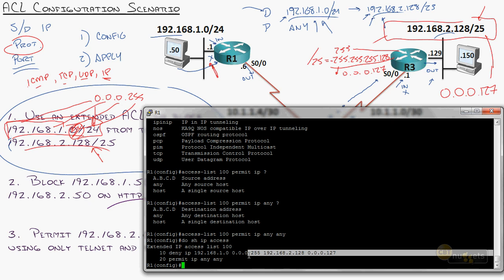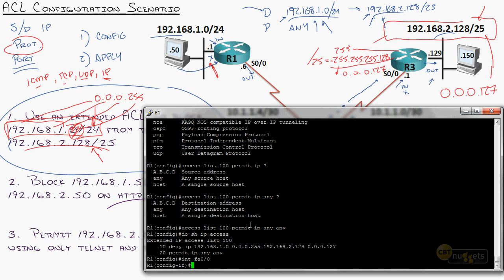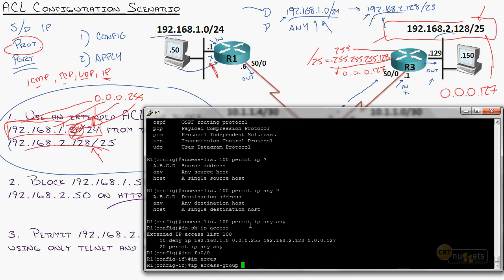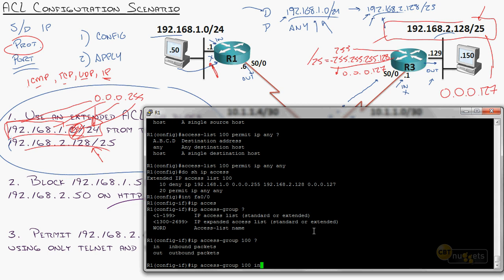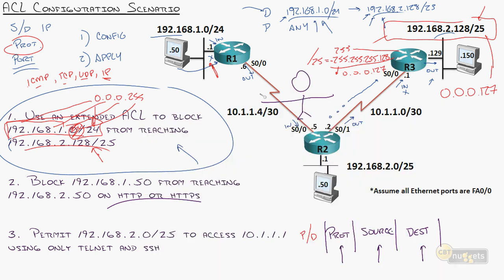Now it says: if you're this source trying to go to this destination, you will be denied. However, if you're anything else — you will be permitted. Even if you're from this subnet trying to access something other than that blocked destination. So I go into FastEthernet 0/0, same command as before: IP access-group 100 inbound. As things are coming in on that interface, it will go through the access list and either deny or permit them.